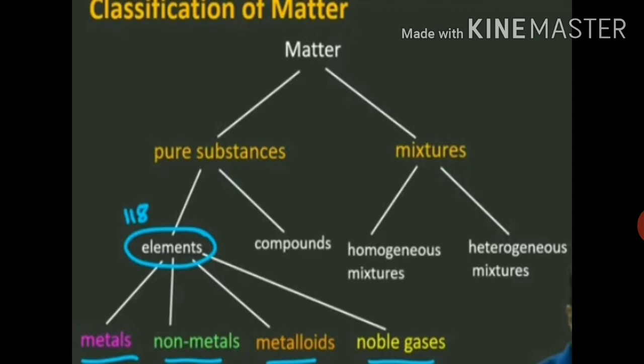Let's see what are compounds. Compounds are chemical substances made up of two or more elements that are chemically bound together in a fixed ratio. Examples include H₂O, NaCl, CH₄, and baking soda. The chemical formula of baking soda is NaHCO₃. These are examples of compounds.